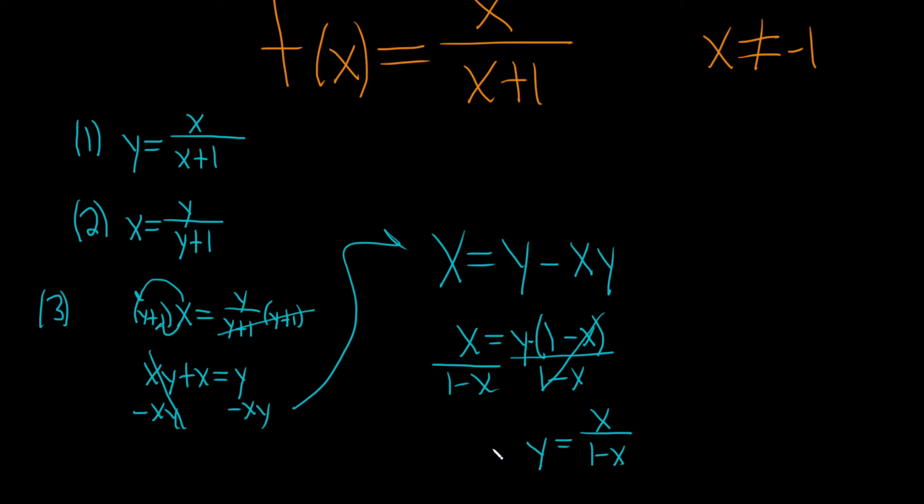The very last step, step 4, is to write the final answer using the proper notation. So the notation for the inverse function is f inverse of x, and that's equal to x over 1 minus x. That would be the final answer. I hope this video has been helpful.